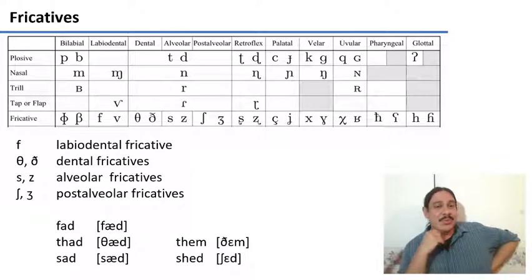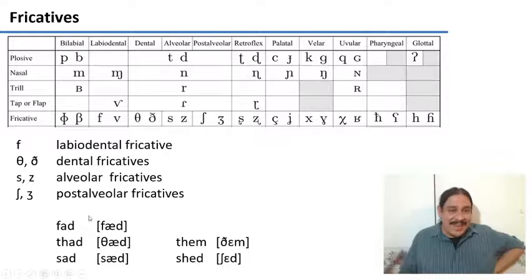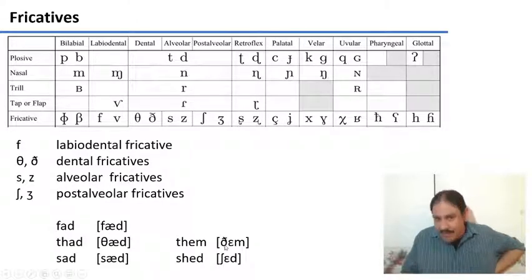These are the transcriptions for those words. Fad has a labiodental first and then an alveolar stop. Thad has this dental fricative and then an alveolar stop. Sad has an alveolar fricative. Them has an alveolar fricative, the, them, which is different from the, and a nasal, them.